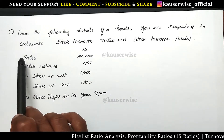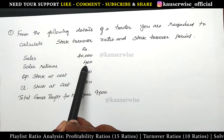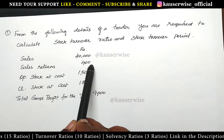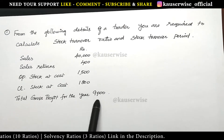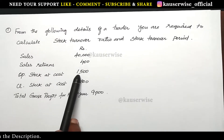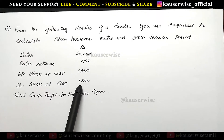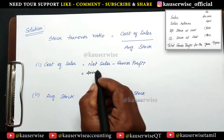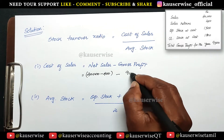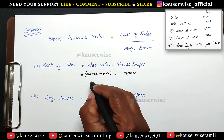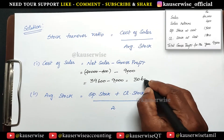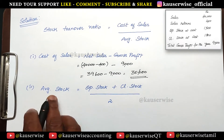See the problem. They have given sales 40,000 and sales returns 400. So 40,000 minus return 400 — you'll be getting net sales. And after finding the net sales, just subtract gross profit for the year 9,000, then you'll be getting cost of sales. So 39,600 minus 9,000 is equal to 30,600. So this is the cost of sales.